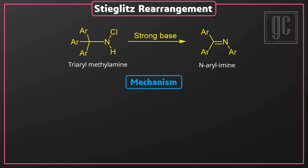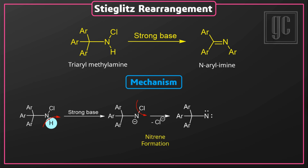Now we are going to discuss the mechanism of this rearrangement. In the presence of a strong base, the acidic hydrogen atom is removed and an anion is formed. The leaving group then leaves the molecule with the bonding electrons, and as a result, a nitrene is formed.